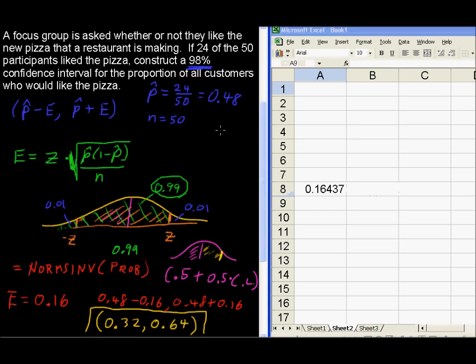So, another way to present this is 48% of the people like the pizza, plus or minus 16%. That's what the margin of error says. So that was using Excel to find the z-score, really, is what we did there.